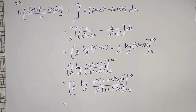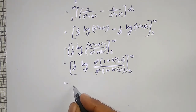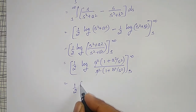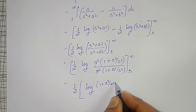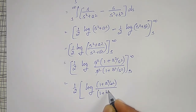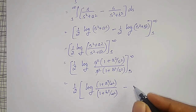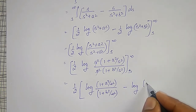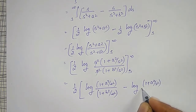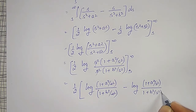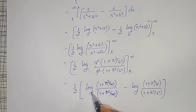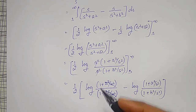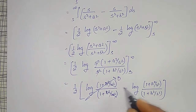Now substitute upper limit minus lower limit. The upper limit gives 1/2 times log of (1 plus a squared over infinity squared) divided by (1 plus b squared over infinity squared). Since a squared over infinity is 0 and b squared over infinity is 0, this becomes log of 1 divided by 1, which is log 1, equal to 0. So the upper limit term vanishes.